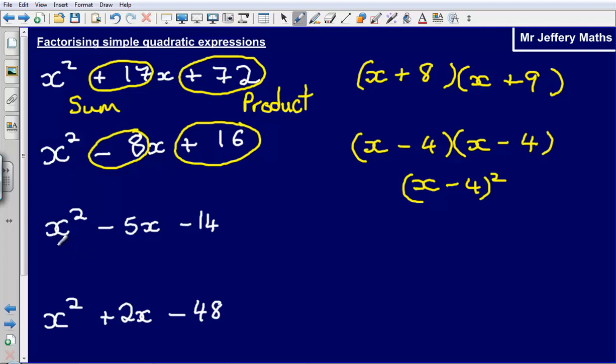Okay, next one, x squared minus 5x minus 14. So again we're looking for two numbers that will multiply to make minus 14 but sum to make minus 5. Those two numbers are going to be x plus 2 and x minus 7.